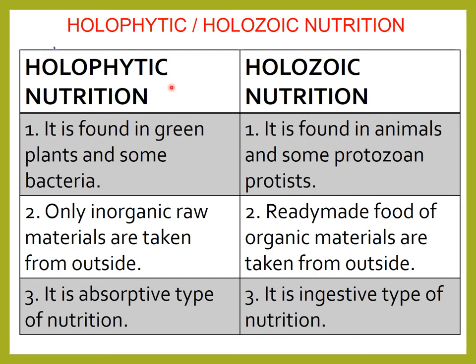Holophytic nutrition is found in green plants and some bacteria. Most of the green plants have holophytic nutrition. Examples: mango, amla, neem, maples, tulsi. And some bacteria also, for example cyanobacteria. Blue-green algae also have holophytic nutrition.